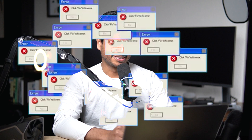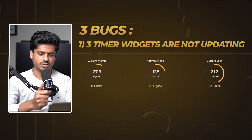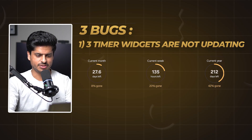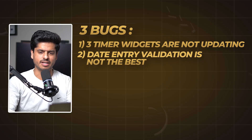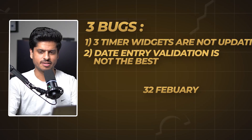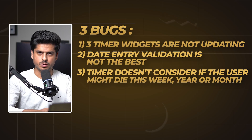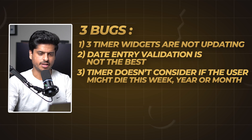No software release is complete without the engineer knowing there are a few bugs, and I know of at least three. First, the three timer widgets are not updating — when you create them they take the current timer value but don't update after that. The live timer widget, however, has been updating fine. Second, data entry validation isn't great — you can enter dates like 32 February, which is weird, though there's no crash and the timer still shows. Third, the timer widgets don't account for the fact that the user might be dying in the current week, month, or year.